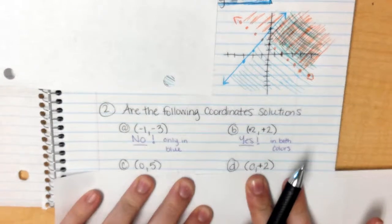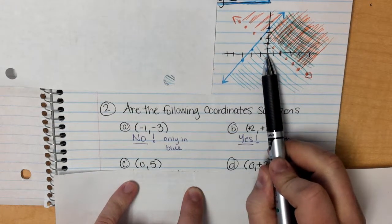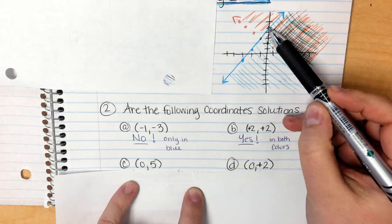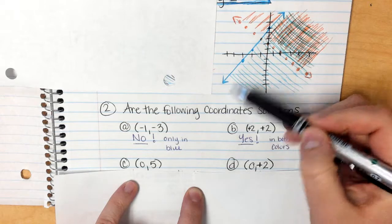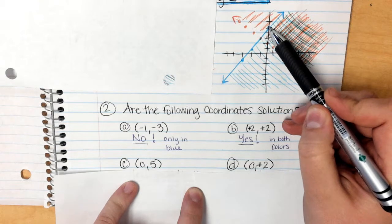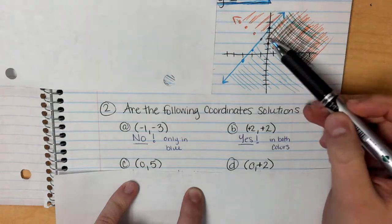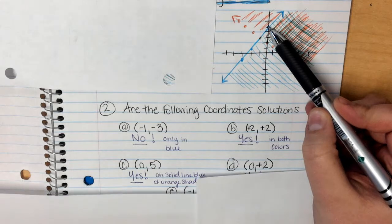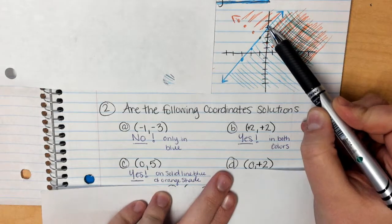Let's do these last two. So this one right here, the point 0,5, is he a solution? So I go over 0, I go up 5. He's right here. So he's right here on this blue line. So I ask myself, is he a solution of the blue? And the answer would be yes, because he is on the blue's solid line. So that works. Is he a solution of the orange? The answer should still be yes, because he is in that shaded region of shaded up for my orange dude. So therefore he is a solution. He is in the solid blue line and he's in the orange shaded region.